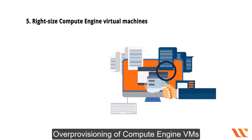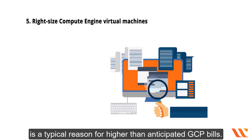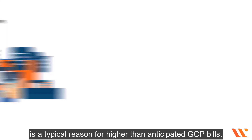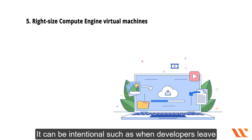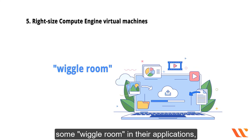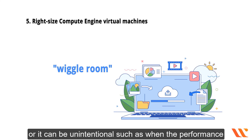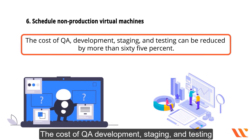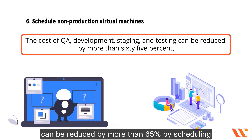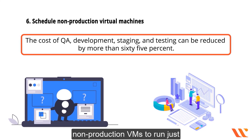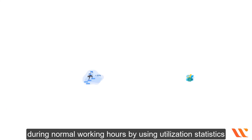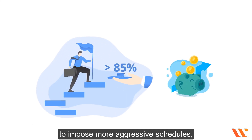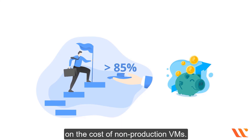Best practice five: right-size Compute Engine virtual machines. Over-provisioning of Compute Engine VMs is a typical reason for higher-than-anticipated GCP bills, and can be intentional — such as developers leaving wiggle room — or unintentional when performance needs are unknown. Best practice six: schedule non-production virtual machines. The cost of QA, development, staging, and testing can be reduced by more than 65 percent by scheduling non-production VMs to run only during normal working hours, with some firms saving over 80 percent.